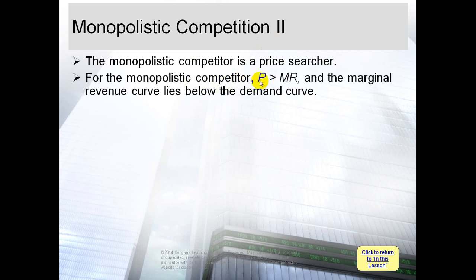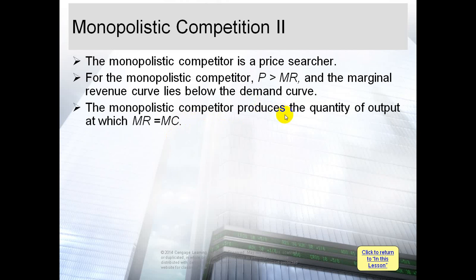For the monopolistic competitor, the price is greater than marginal revenue. Why? As long as you are a price searcher and have control on your price, the price will be greater than marginal revenue, and also the price will be greater than marginal cost. The marginal revenue curve lies below the demand curve. The monopolistic competitor produces the quantity of output at which marginal revenue equals marginal cost.